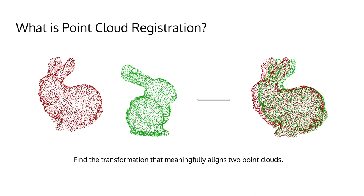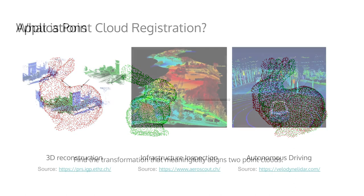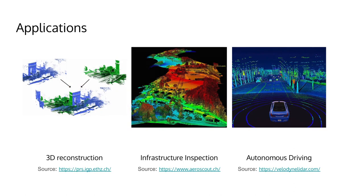Point Cloud Registration can be defined as the task of finding the transformation that meaningfully aligns two point clouds. This task is particularly relevant for 3D reconstruction, supporting applications like inspection and maintenance, as well as in autonomous driving as an intermediate step to achieve ego motion prediction.